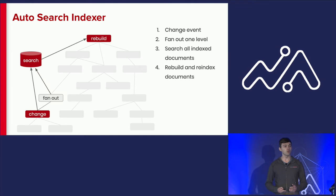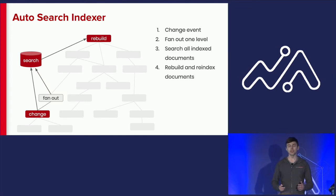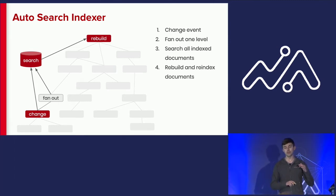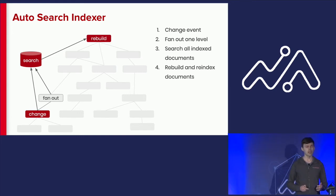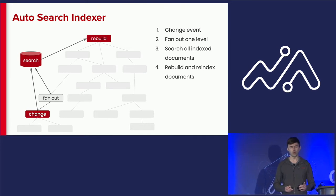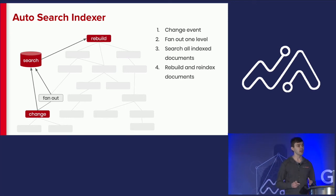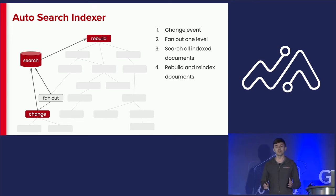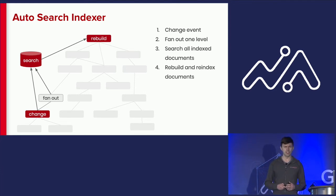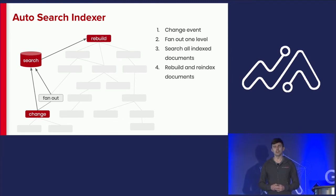This approach actually works for much more complex data as well. The original fanout operation only needs to go up one level, from the changed vertex to its parent. We don't have to do a full graph search to find out what changed, because only that vertex and its immediate edges could have changed. The fanout operation in combination with the search gives us enough information to keep our index up to date.